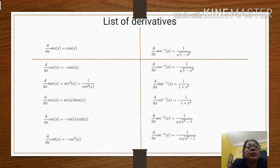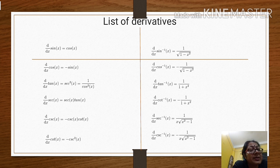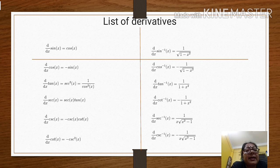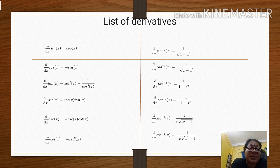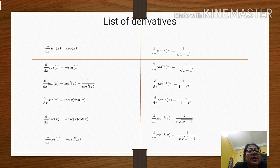For trigonometric functions: the derivative of sin x is cos x, derivative of cos x is minus sin x, derivative of tan x is sec squared x, and derivative of sec x is sec x tan x. Similarly, derivative of cosec x is minus cosec x cot x, and derivative of cot x is minus cosec squared x. For inverse functions: the derivative of sin inverse x is 1 by root of 1 minus x squared; derivative of cos inverse x is minus 1 by root of 1 minus x squared; and derivative of tan inverse x is 1 by 1 plus x squared.